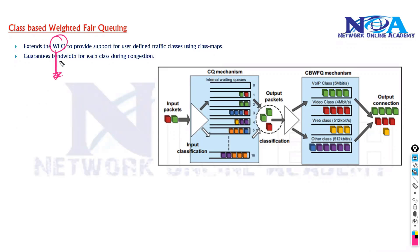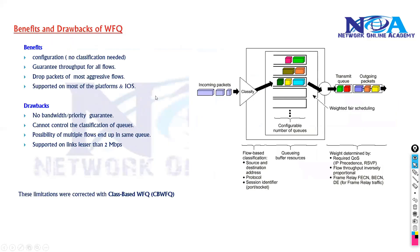The dynamic method of WFQ can be extended to support manual classification. As discussed previously, WFQ has some drawbacks: traffic cannot be queued, there is no guaranteed bandwidth or priority, and it doesn't support links above 2 Mbps.